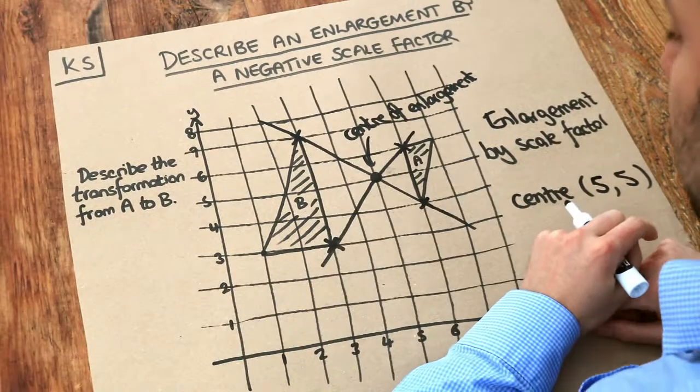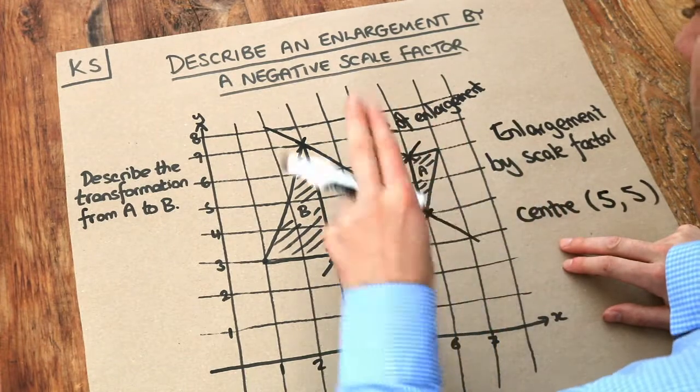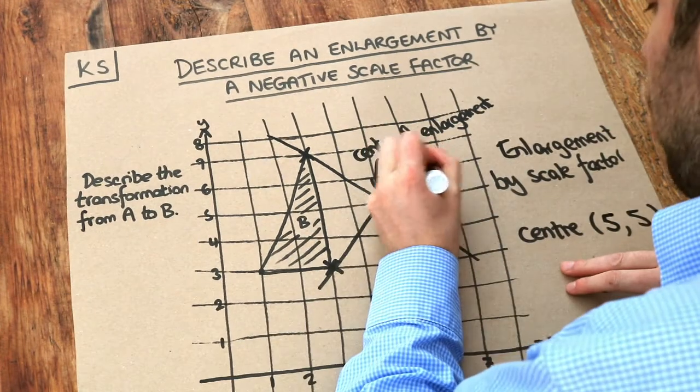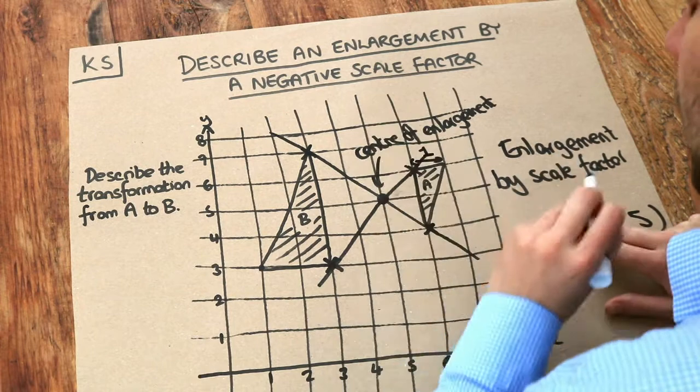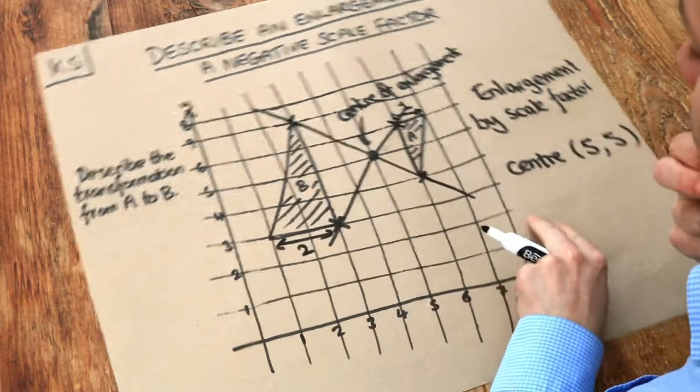Now the scale factor. I previously said that we look at the width of each of the shapes. We can see this is a width of 1 unit, 1 square. And this is a width of 2 units. So you might think that the scale factor is 2.